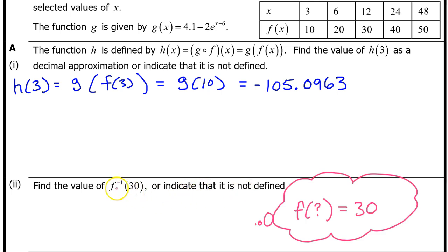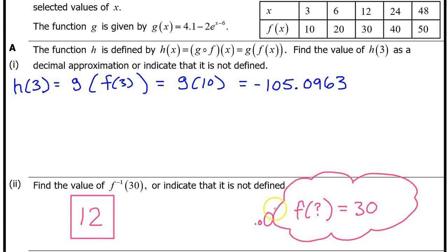To evaluate f inverse at 30, you should be thinking f at what is equal to 30. Looking at the chart, f at 12 is equal to 30, so the value of f inverse at 30 is 12. You don't need to show any work, and you don't need to put anything in front of the 12. You can just put 12.